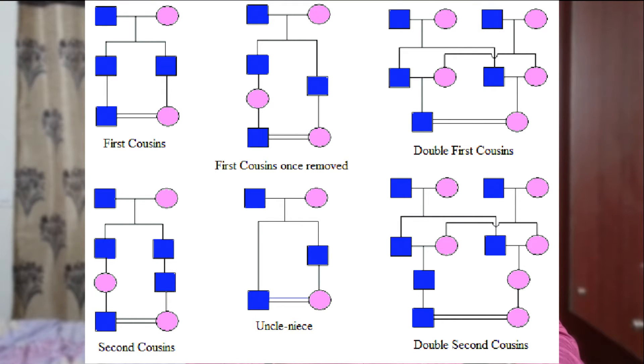Where is the risk more? The more closer the relationship, the higher the risk. This consanguineous marriage is more prevalent in Asia, the Middle East, and Africa. It is not confined to a particular religion — it is prevalent in almost all religions. In each community, there is a type of consanguineous marriage which is allowed. Depending upon the genetic proximity and the level of inbreeding, the risk is more.